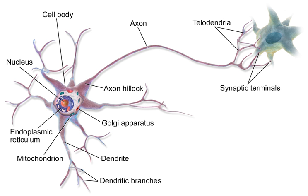In fact, neurons can form even tighter couplings — the squid giant axon arises from the fusion of multiple axons. Ramón y Cajal also postulated the law of dynamic polarization, which states that a neuron receives signals at its dendrites and cell body and transmits them, as action potentials, along the axon in one direction, away from the cell body. The law of dynamic polarization has important exceptions: dendrites can serve as synaptic output sites of neurons and axons can receive synaptic inputs.